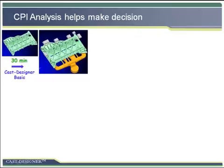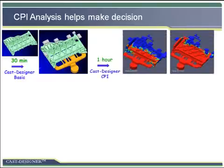After that, we performed a CPI analysis that took around 1 hour. There were problems in the region of the left and right inner gates with air entrapment. Also, the overflow on the left side was unreasonable, and the right side one was totally unused.